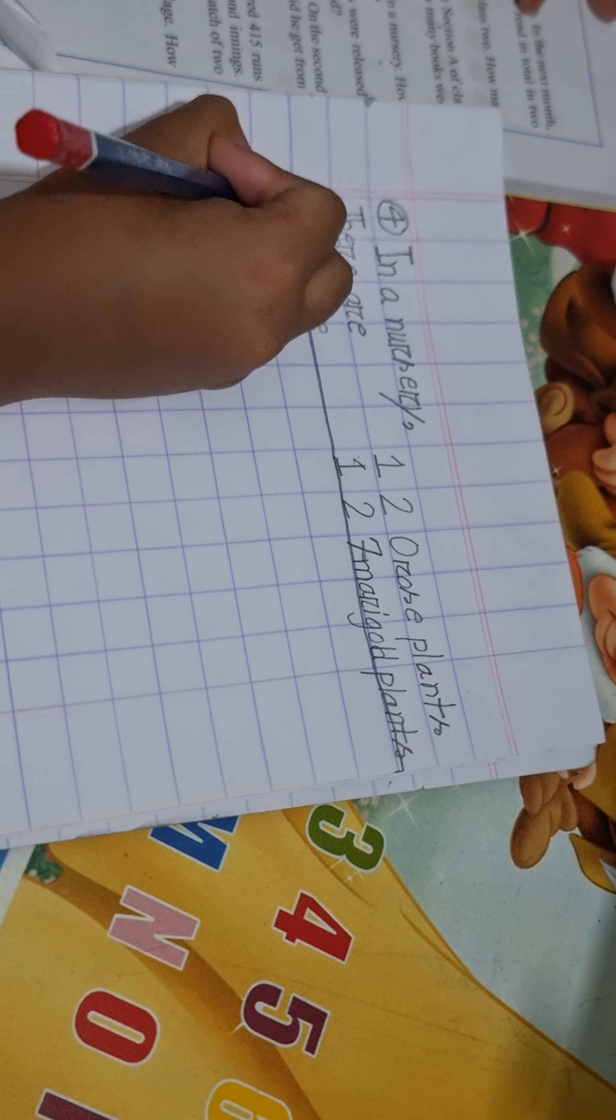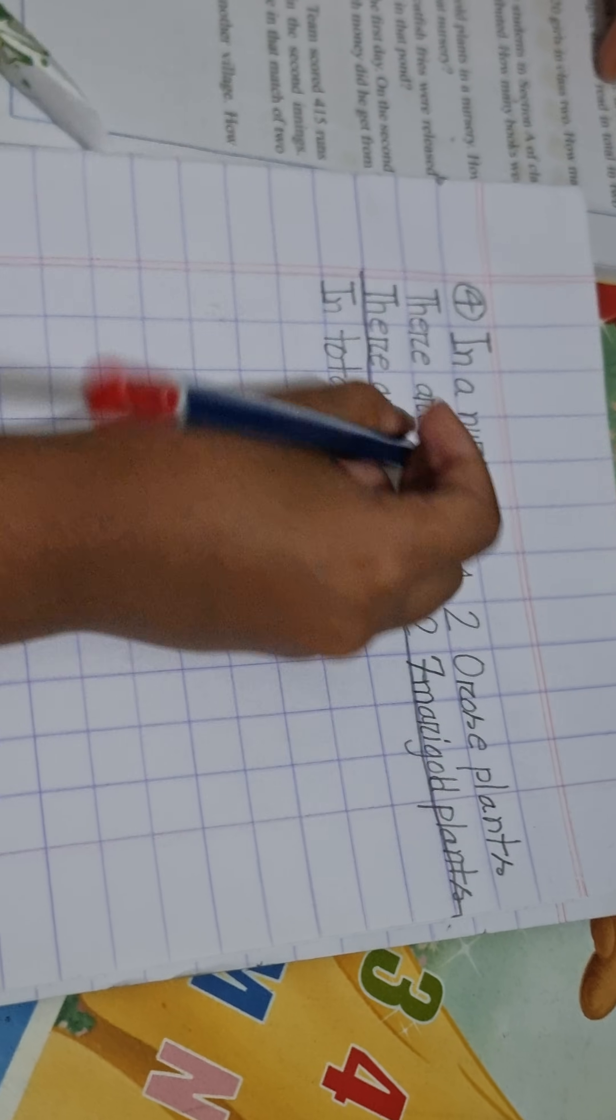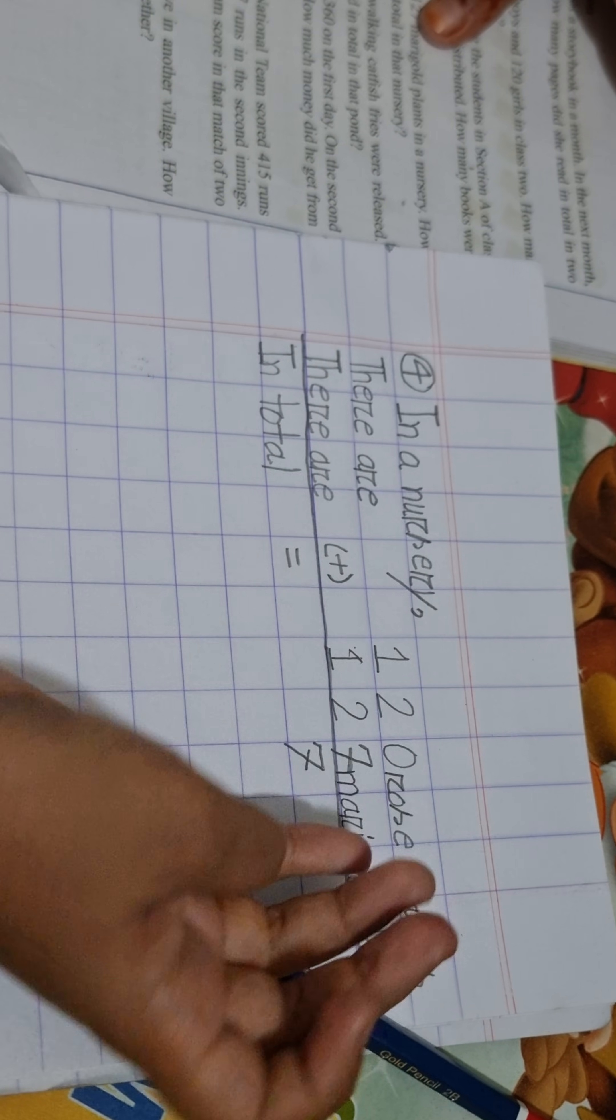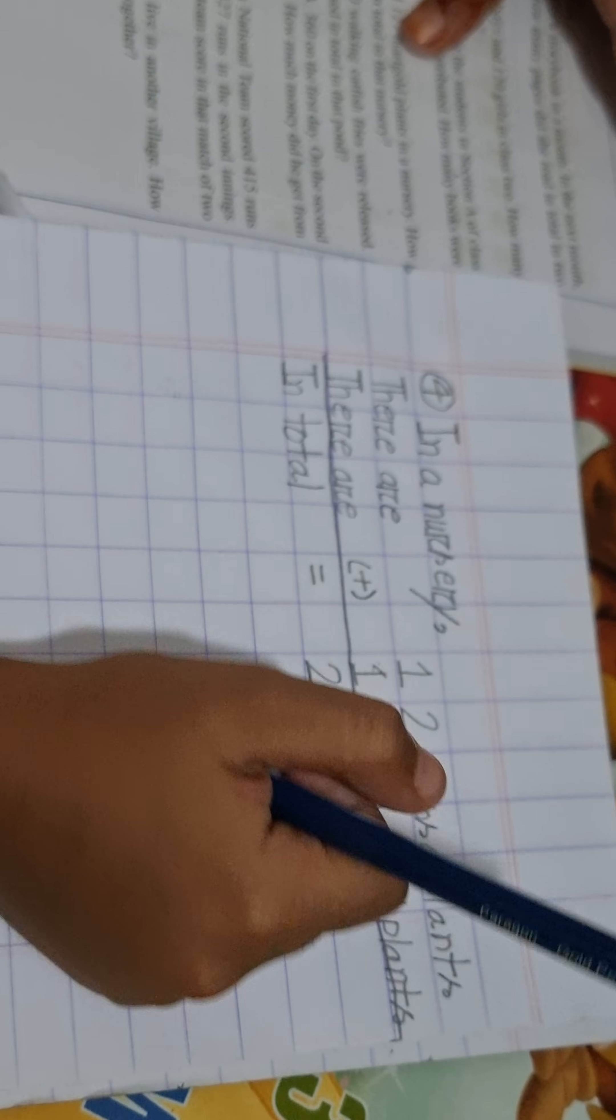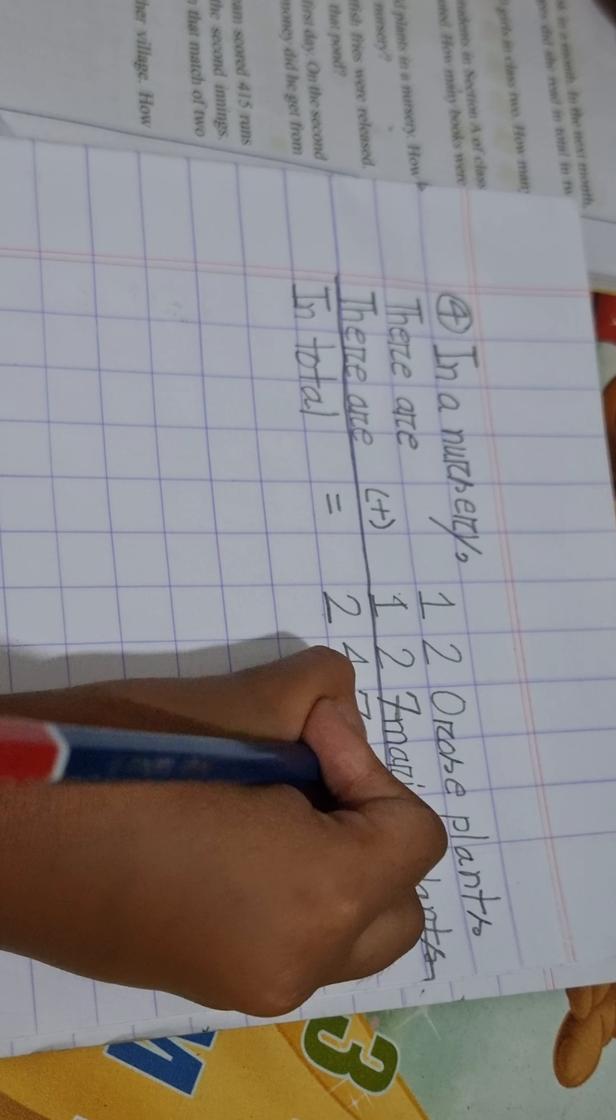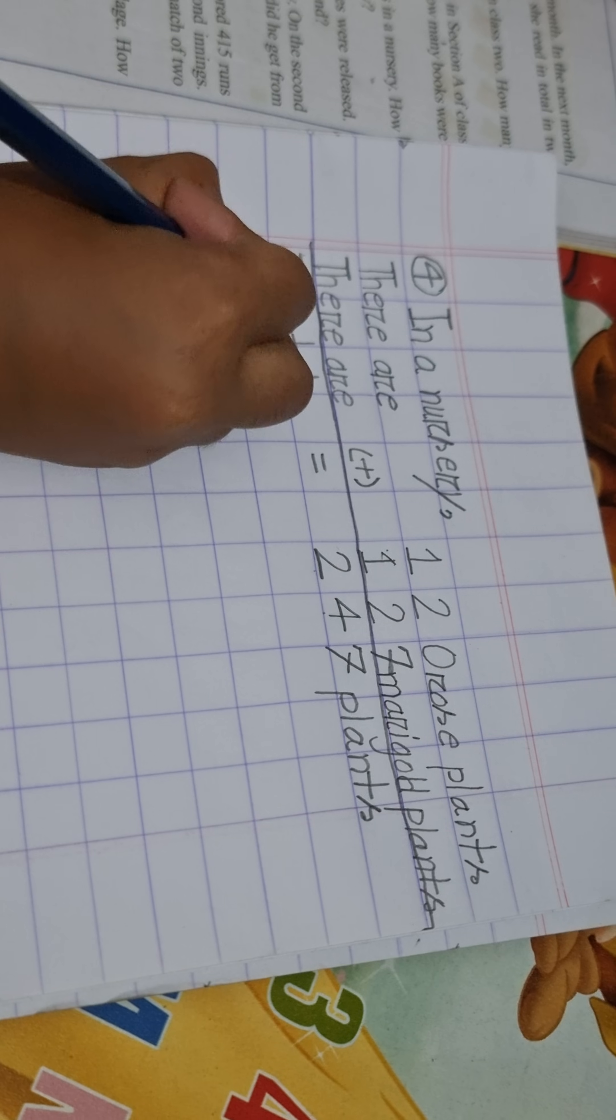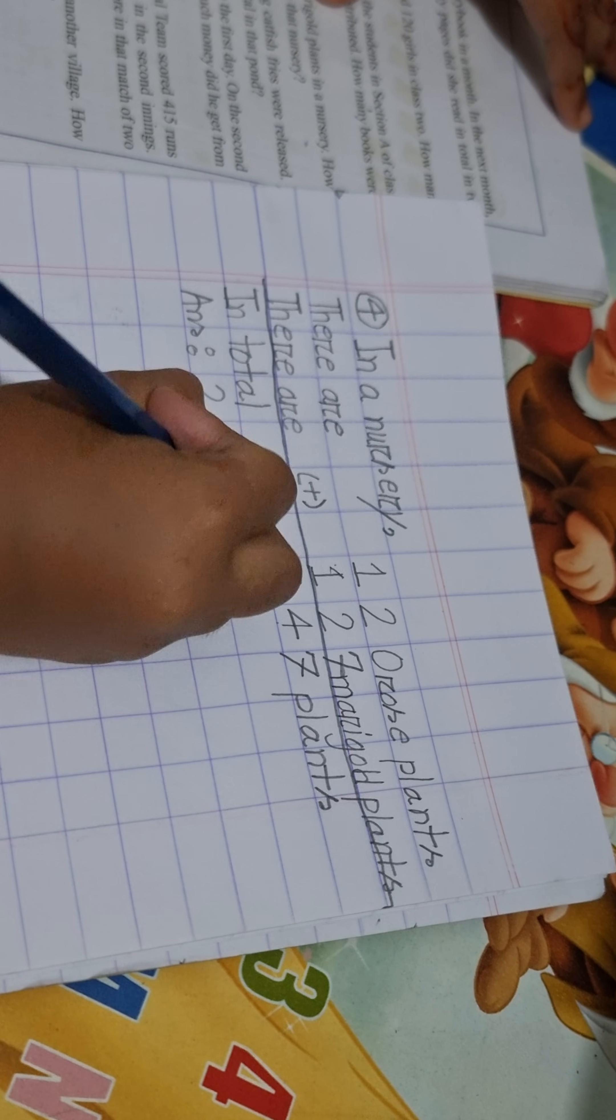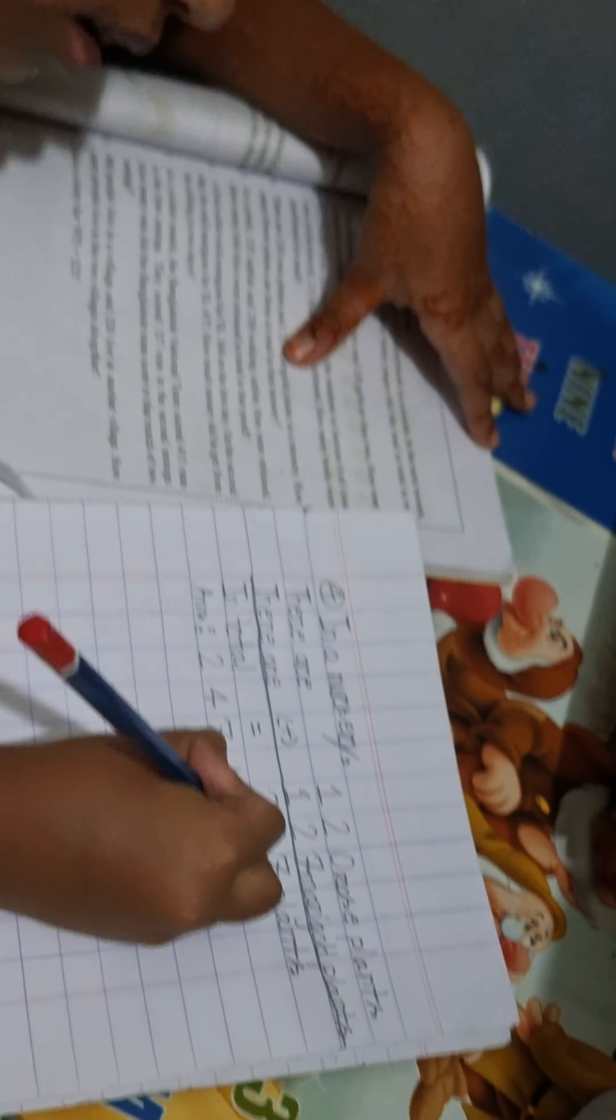In total, 247 plants. Answer: 247 plants.